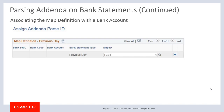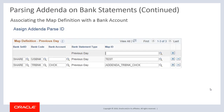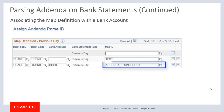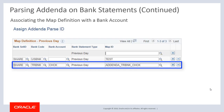In the second method, if you intend to use one map definition for all bank accounts, populate the default grid row with the map ID. In the third method, if you intend to use one map definition for all bank accounts associated with a single bank, add a row, specify the bank, and populate the map ID. In the final method, if you intend to use a map definition for a specific bank account, add a row, specify the bank account, and enter the map ID. Note that the parse ID processes all bank accounts for US bank and the individual bank account for TR bank.